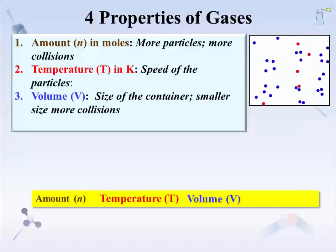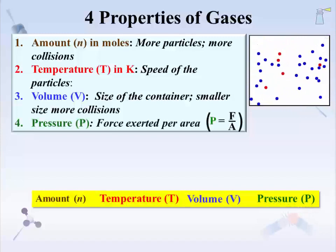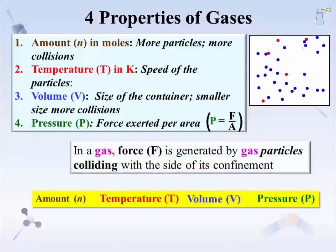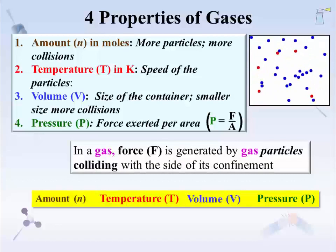Finally, there is pressure. It is defined as force per area. In a gas, force is generated by gas particles colliding with the sides of their confinement — or really with anything. Force is proportional to the number of collisions, so anything that increases collisions increases the pressure.